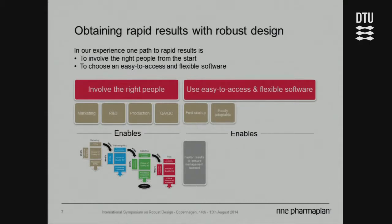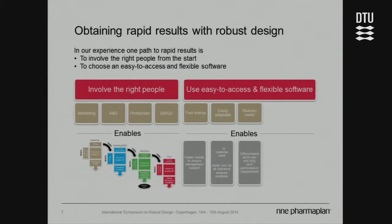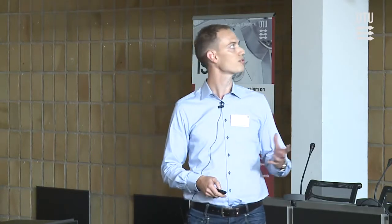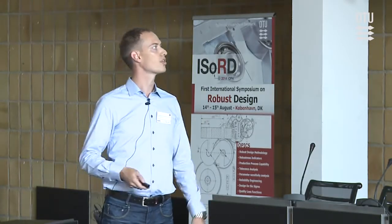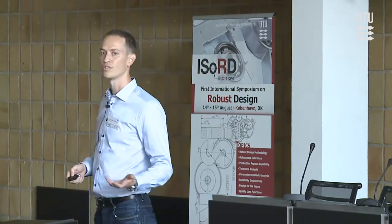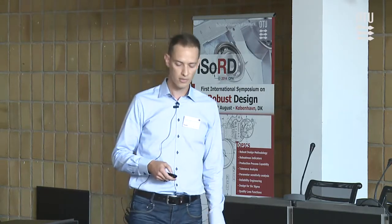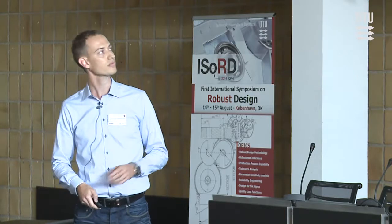You need something that is easily adaptable, enabling you to use the same tool for multiple purposes — not just geometric analysis, but also processes. You need to build a realistic model to differentiate between short-term and long-term variation, OQ and PQ demands. Having software that enables enforceable input assumptions is critical so you can reliably predict variation and yield issues from incoming components. You also want to feed back data from pilot production into the analysis model to learn from findings and set specifications more realistically, reflecting what your production facility is actually capable of.